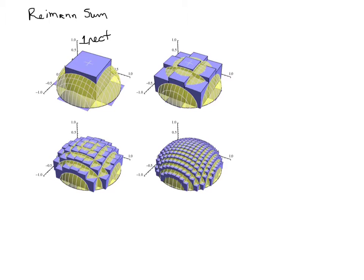The second one just has nine rectangles. This next one, I'm not going to count them, but you can see that there's a lot more rectangles. And the more rectangles, the better the estimation of that volume would be.